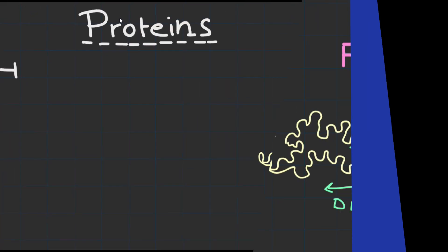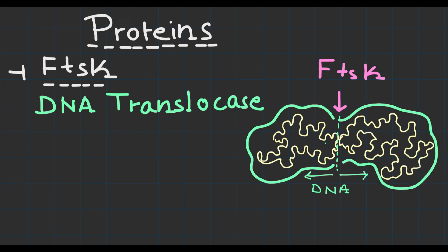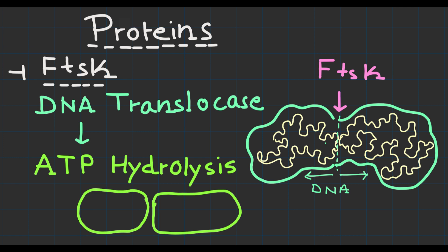Another important player in the divisome core complex is FtsK, a DNA translocase. FtsK is responsible for segregating the bacterial chromosomes during cell division. It uses ATP hydrolysis to move the DNA into the daughter cells, ensuring each cell receives a complete set of genetic material.